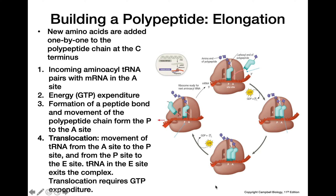This translocation process requires the hydrolysis of a molecule of GTP. The tRNA that was in the A site is now in the P site, the tRNA that was in the P site is now in the E site, and it will exit the ribosome from that E site and go back into the cytoplasm to be reloaded with another amino acid.